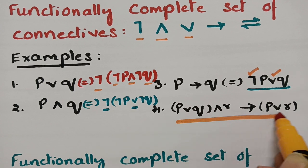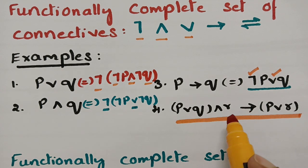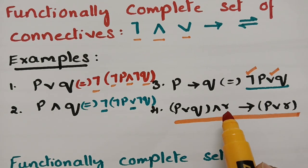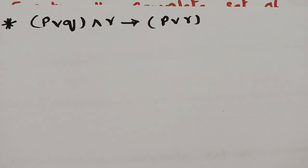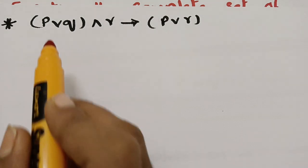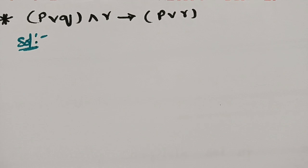Let me explain with a more complex formula. In this formula we have disjunction, conjunction, and implication. This will be replaced by the set negation∧conjunction or negation∨disjunction. So the set {negation, disjunction} or {negation, conjunction} are called the functionally complete set of connectives.